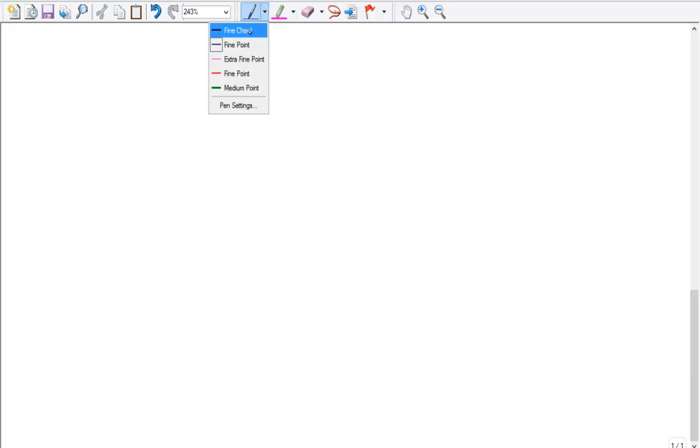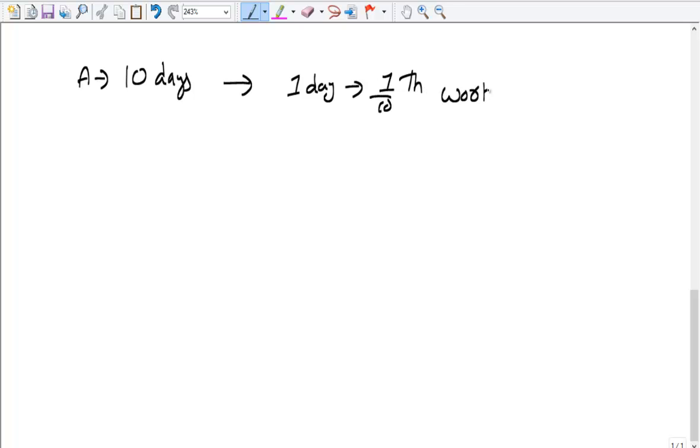What normally happens, what students normally do is, if A finishes a work in 10 days, the immediate thing is in one day A would finish 1/10th of work. Or some people say since A finishes the work in 10 days and it's 100% of the work, in one day A would finish 10% of the work. This is also very simple. But the problem is instead of 10, if we have a number where we get the percentage of work in terms of decimals, then it leads to a bit of complexity.